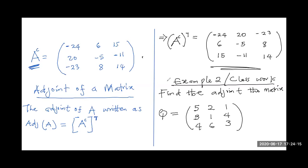So what I'm expecting you to send to me is your final answer, which is the adjoint. That means after you have found all the cofactors and formed your matrix of cofactors and transposed — which gives the adjoint — that is the answer you should send to me.